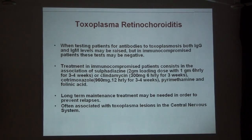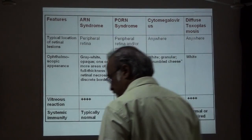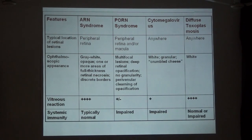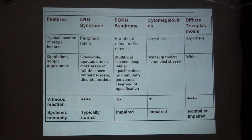Ocular toxoplasmosis can also be associated with CNS lesions, so neurological evaluation is also warranted. This chart shows a comparison of all the necrotizing retinitis entities discussed. The typical location in acute retinal necrosis is peripheral, whereas in PORN it tends to affect the posterior pole. CMV can start anywhere and diffuse, and toxoplasmosis also can start anywhere. The vitreous reaction is very high in acute retinal necrosis and toxoplasmosis, whereas it is relatively low in PORN and CMV retinitis, suggesting these latter patients have very lowered systemic immunity.